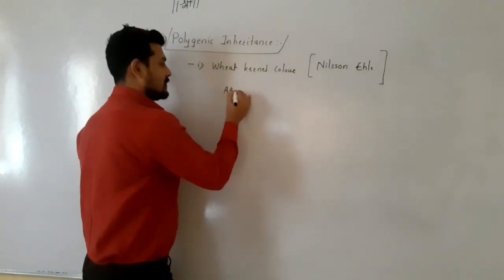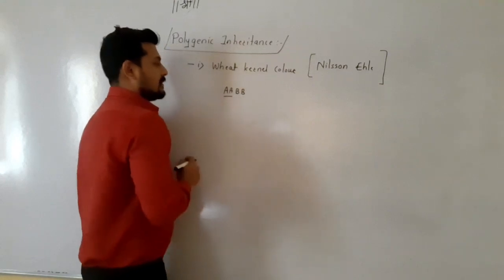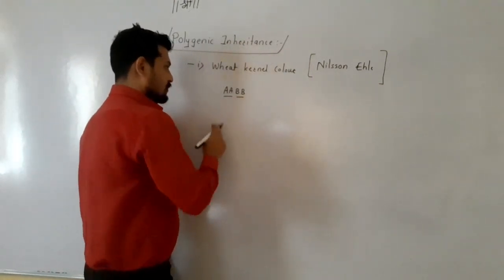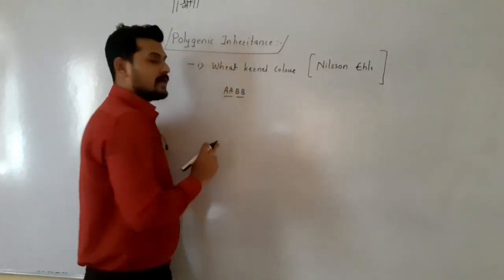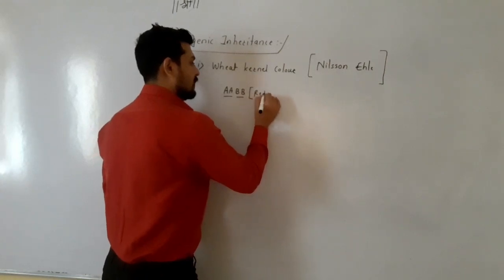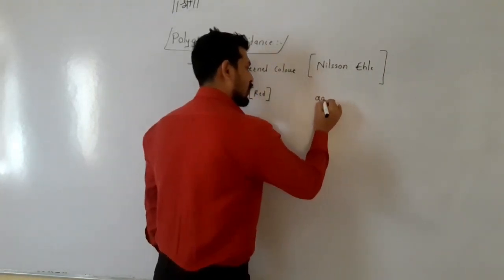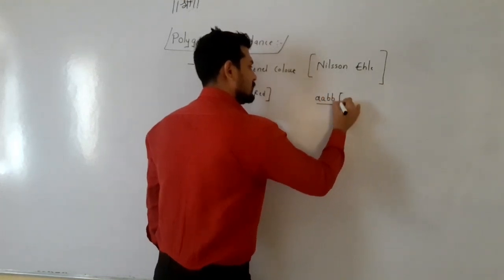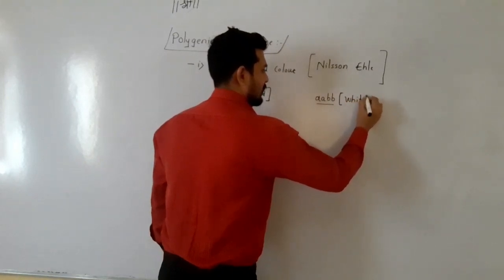Red color is dominant over white. Red color is decided by two types of genes: dominant A and dominant B, where A and a are alleles of each other and B and b are alleles of each other. The two dominant genes A and B decide the red wheat kernel color, while the recessive genes a and b decide the white kernel color.